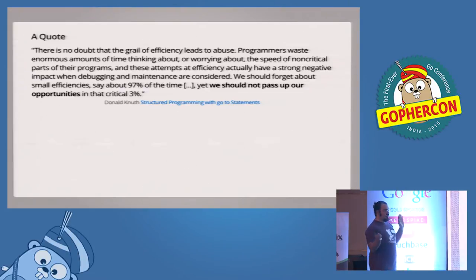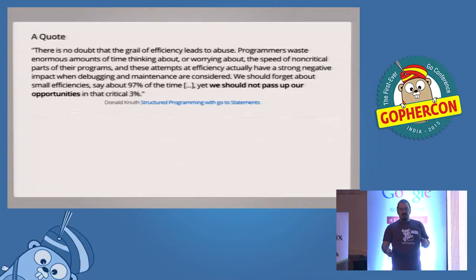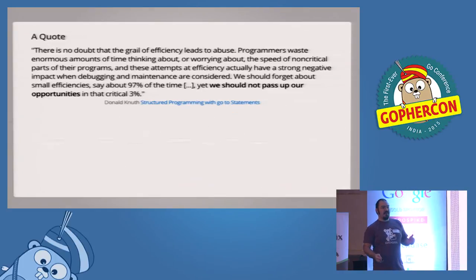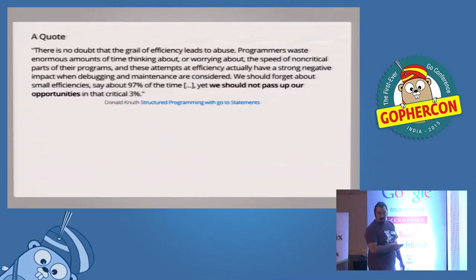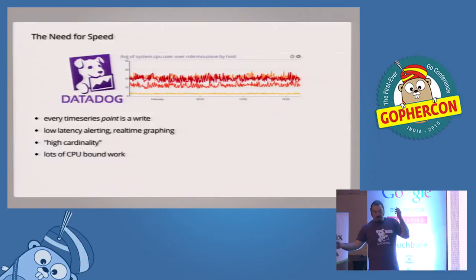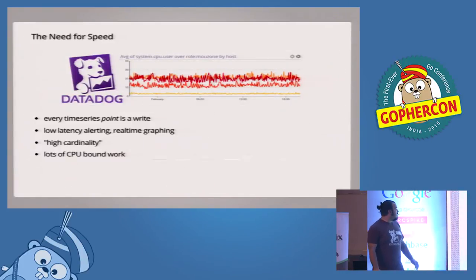We want to put all that philosophy to one side and start with the idea that we've written a program, we've run it, and either it uses too much CPU, it's too slow, or it doesn't have the throughput that we need. So why am I here talking about this? I work at Datadog.